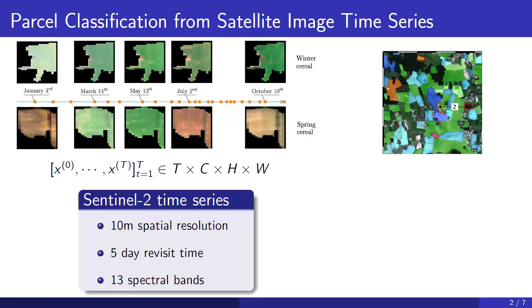For this work, we focused on Sentinel-2 time series. Sentinel-2 is a publicly available source of satellite imagery. It has a 10 meter spatial resolution, a revisit time of five days, and it has 13 spectral bands.